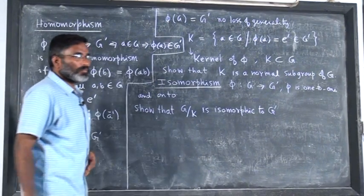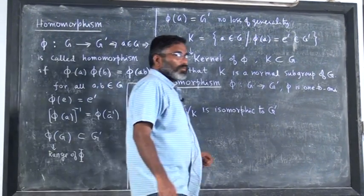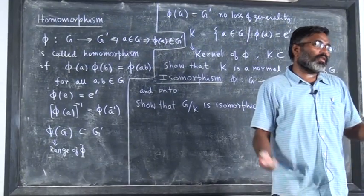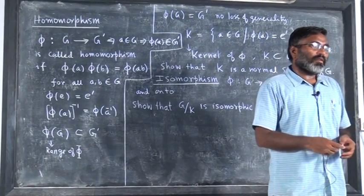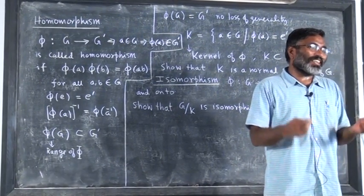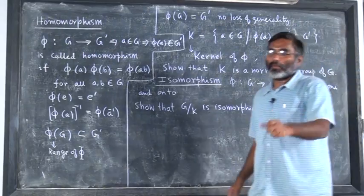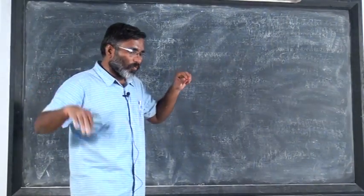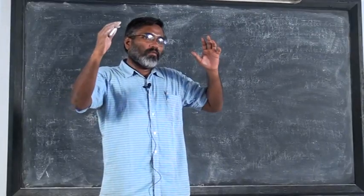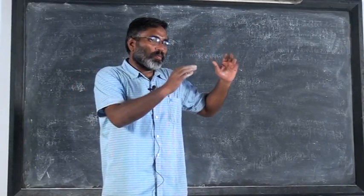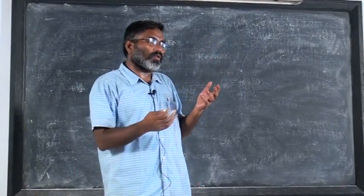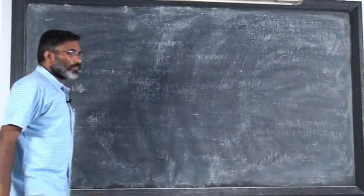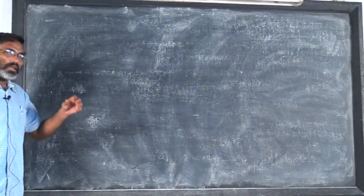What is the kernel in an isomorphism? It is a trivial kernel because one-to-one correspondence is there — only the identity will be mapped to identity. If you have a big group, you will get subgroups — subgroups of groups of order less than the group order.